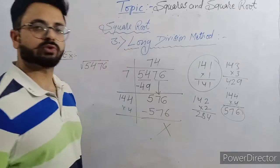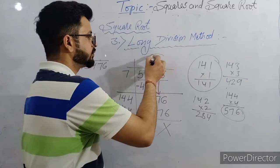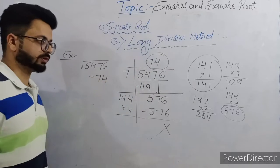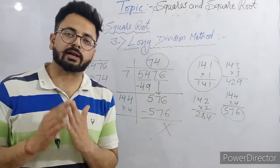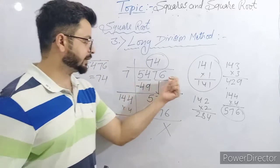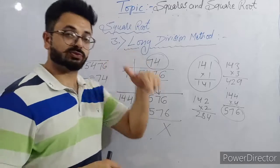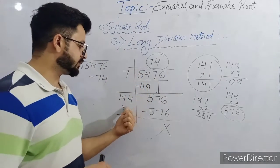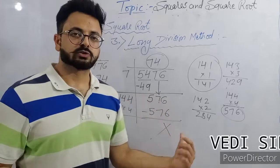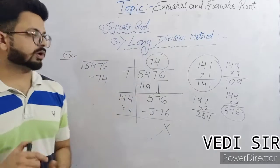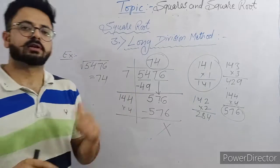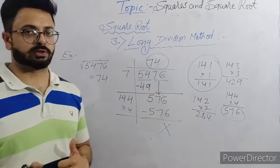When we multiply by 4 we get 576 and subtract — then 0 remains. So the square root of 5,476 is 74. This is the long division method — an algorithm-type, stepwise process. First make periods, then find the number whose square you can subtract from the first period, then find what digit to place with the doubled number to get the next part.